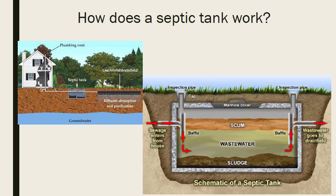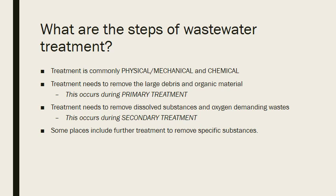The broken-down material ends up in one of three places: the scum on the top, the wastewater in the middle, or the sludge at the bottom. The wastewater is eventually pulled out and taken to a drain field where it is filtered naturally through soil. There is also a manhole cover on the septic tank so someone can come and pump out the buildup of sludge to prevent backup into the house.